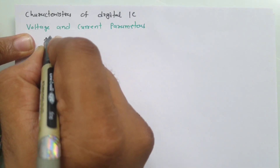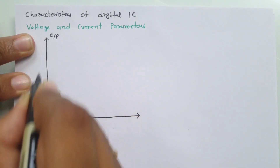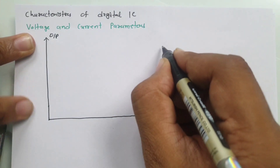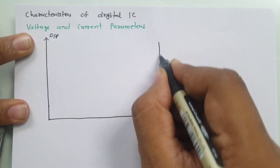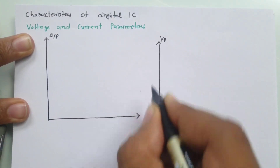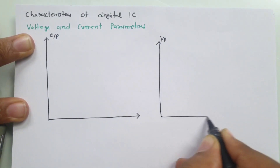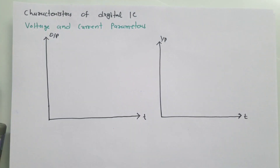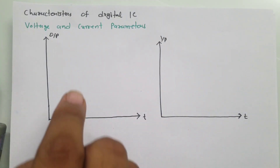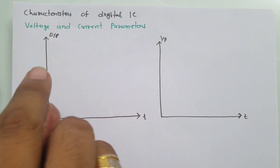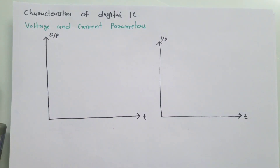Here I'll be making an output voltage versus time graph, and here I'll be making an input voltage versus time graph. We are not much concerned with respect to time, but we are very much concerned with respect to the voltage range.